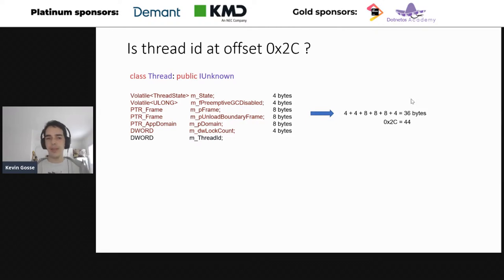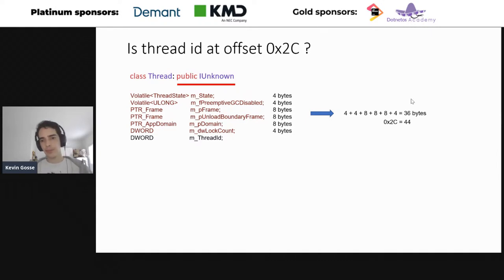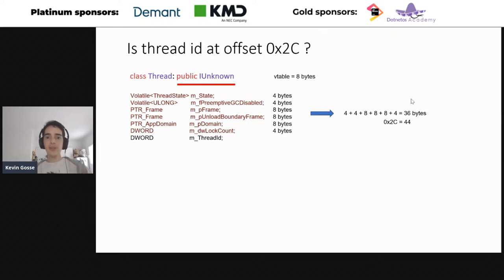The math gives 36, not 44 — does that mean my theory was wrong? Not quite. If you pay close attention, Thread inherits from IUnknown, which declares some abstract methods, meaning Thread has virtual methods. In C++, if your object has virtual methods, it declares a vtable, and a pointer to the vtable is exposed at the very beginning of the object — it's as if during compilation an extra pointer field was inserted at the beginning. Since it's a 64-bit process, that pointer is 8 bytes. Redoing the math by including those 8 bytes, we find 44 — confirming that the thread ID is stored at offset 0x2C, and that the crash is caused by calling GetThreadID on pThread, where pThread is minus one.